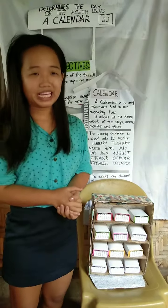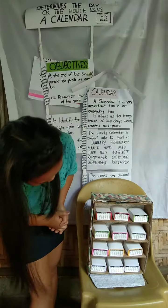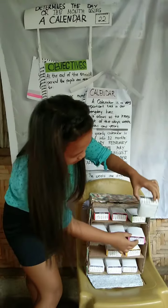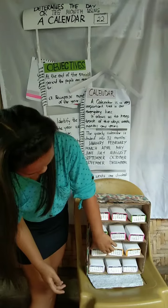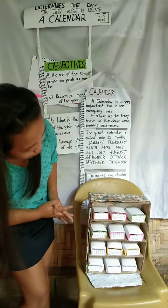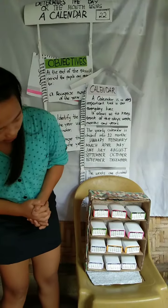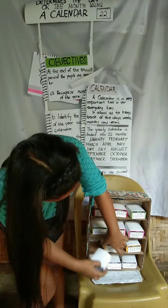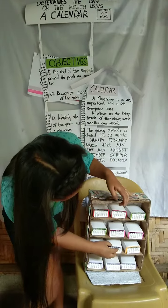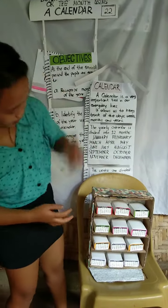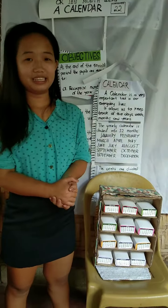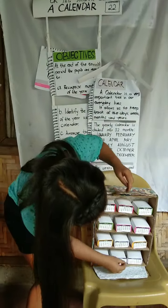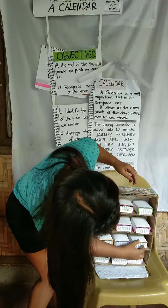Malapit na natin mahulaan ang ano natin. Ano ang kasunod ng June? The July. Ano ang kasunod ng July? Alam nyo? The August. Where is August? Okay.